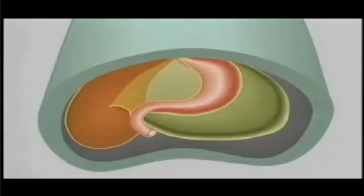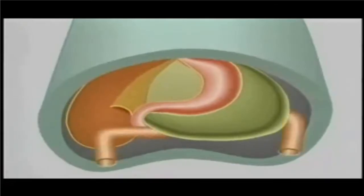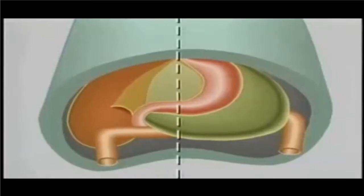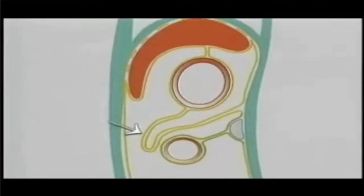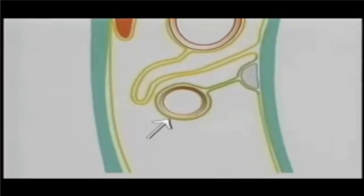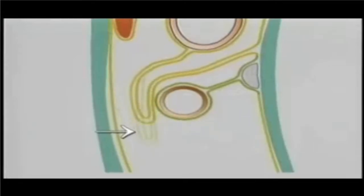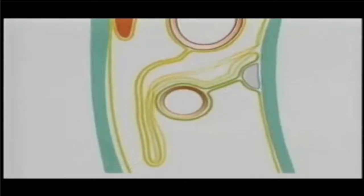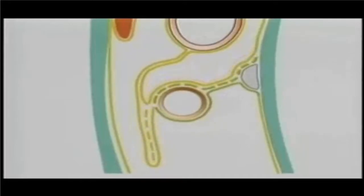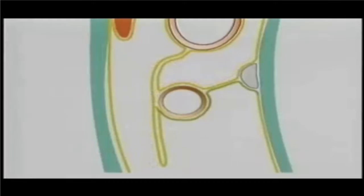To see how the greater omentum develops, we'll add the transverse colon to the picture. The dorsal mesogastrium hangs down in front of the transverse colon. To follow its growth, we'll look at a sagittal section. Here's the lesser omentum between the liver and the stomach. Here's the greater omentum hanging down in a double fold. Below it is the transverse colon, suspended by the transverse mesocolon. This is the pancreas. The greater omentum grows downwards in front of the transverse colon, then comes together with the transverse mesocolon, and the duplicated layers are absorbed.